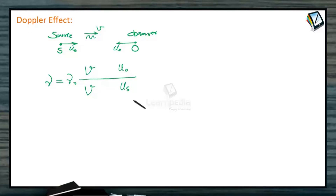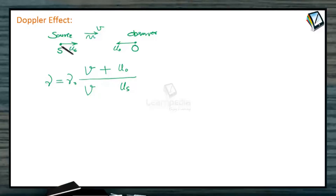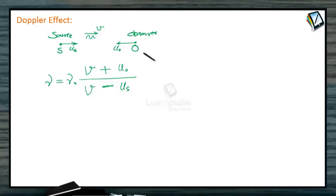Source is in the denominator. When observer moves towards the source, frequency increases because observer is in the numerator, so to increase the frequency you apply the plus sign. When source moves towards the observer, frequency should also increase. Since source motion is in the denominator, to increase the frequency we keep it minus so that the denominator value decreases. So here both factors are increasing the apparent frequency of the source — this is the case when source and observer both move towards each other.